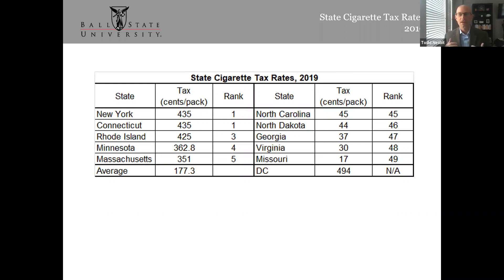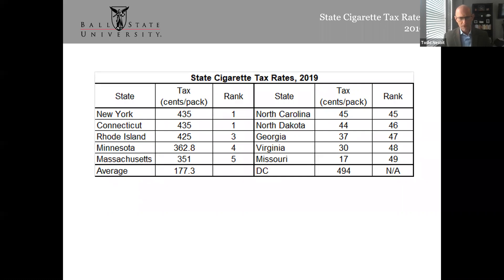We've coined the term 'prohibition by price': if a tax is set too high, more people turn to the illicit underground economy to avoid taxation. Once you've encouraged people into the underground economy, it becomes a slippery slope. Excessive excise taxation leads to activities that resemble what we observed during Prohibition itself.